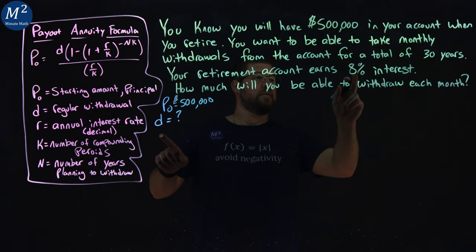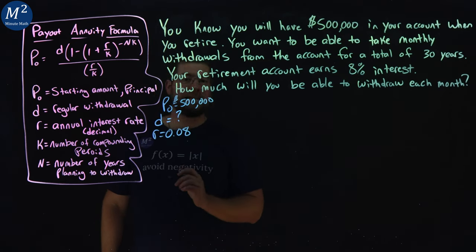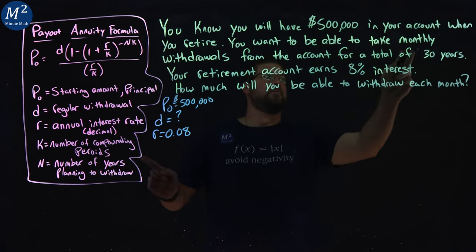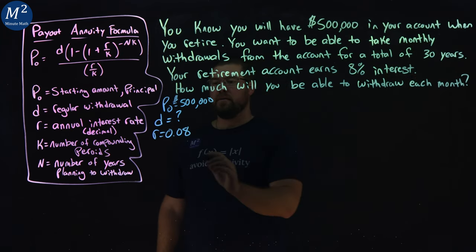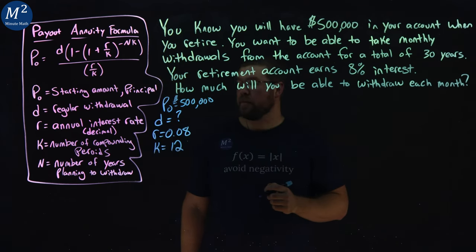The interest rate R, 8% they tell us, as the decimal 0.08. The number of compounding periods K, we're told it's monthly right here. So K is going to be 12, 12 months in a year.